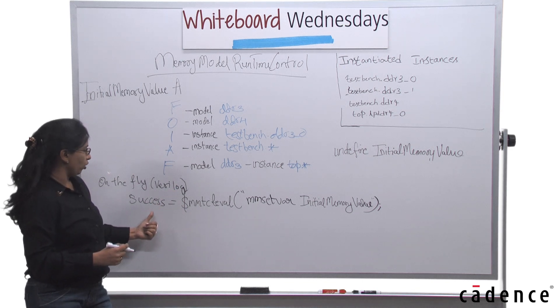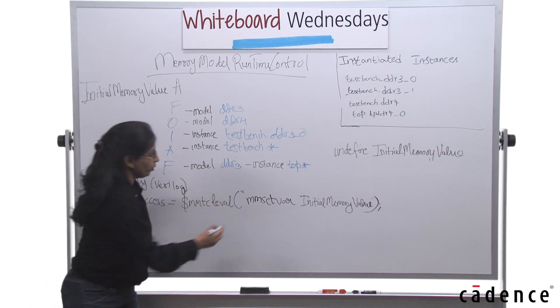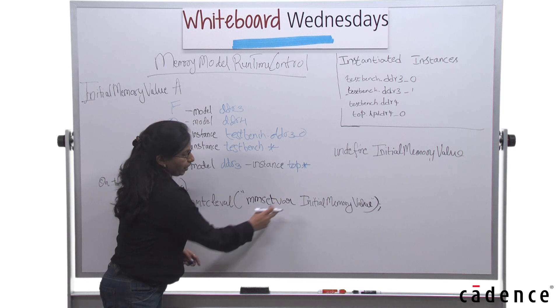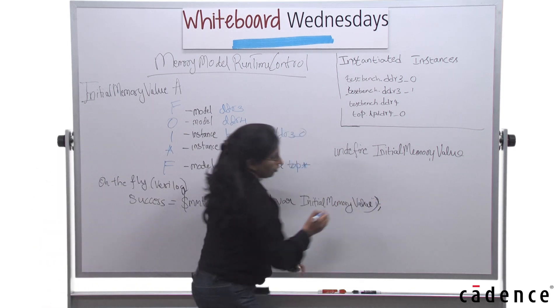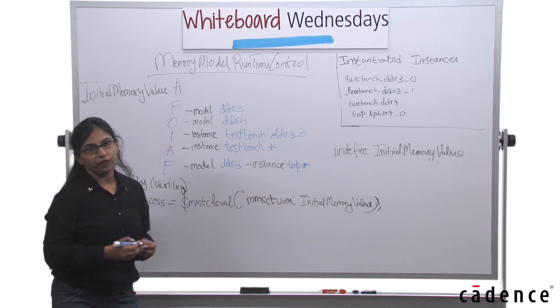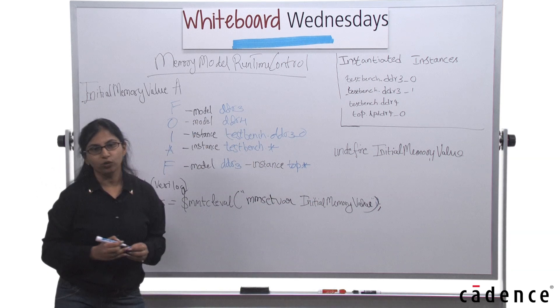All these initial global switches can be set on the fly. The syntax in Verilog would look like success equal to mmtickleval, mmset were initial memory value to whatever value you need to. Let's say 1. So this can be set on the fly, and you can keep changing the value at every instance.